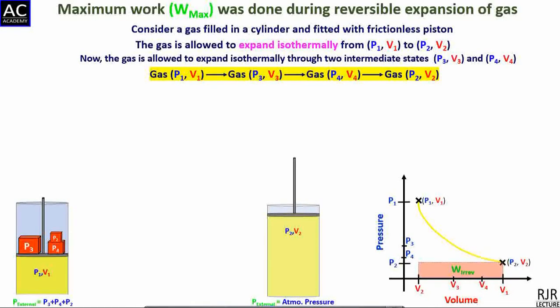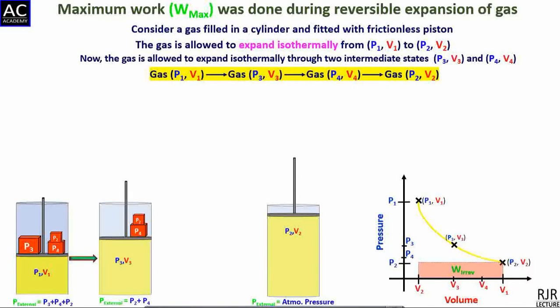The weight exerting pressure P3 is removed from the upper surface of the piston. The pressure inside the gas increases and the gas expands until the pressure equals the external pressure, which is the sum of P4 and P2. The final volume attained is V3 from the initial volume V1. The work done during this expansion equals the area under the curve between states P1,V1 and P3,V3, denoted in the graph by an indigo colored rectangle.